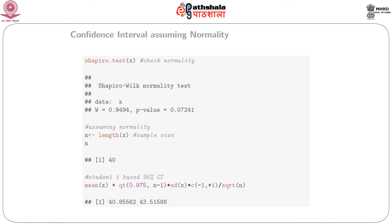If we assume normality, we can compute the confidence interval. We define n as length(x), and calculate: mean(x) ± qt(0.975, n-1) * sd(x) / sqrt(n). That is the Student's t-based 95% confidence interval, and the value comes out to be 40.85 to 43.51.